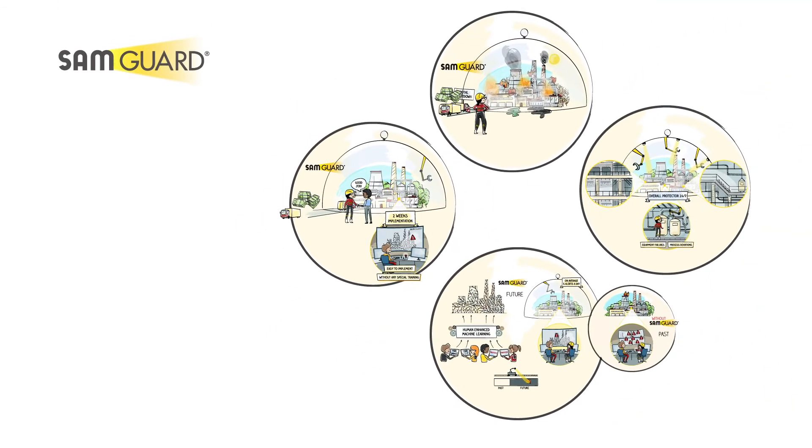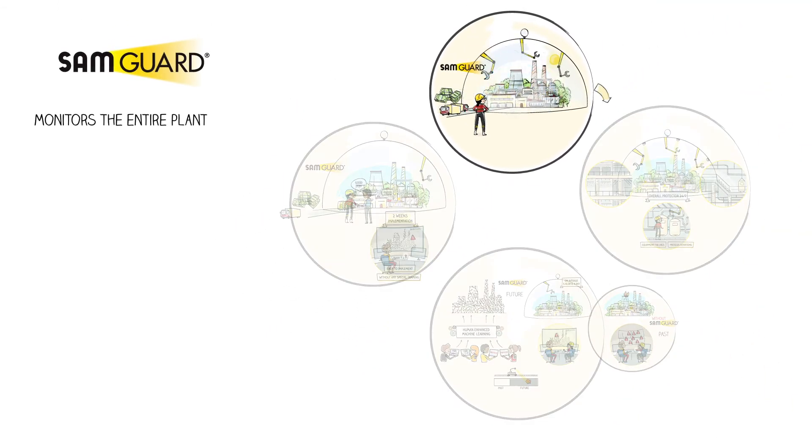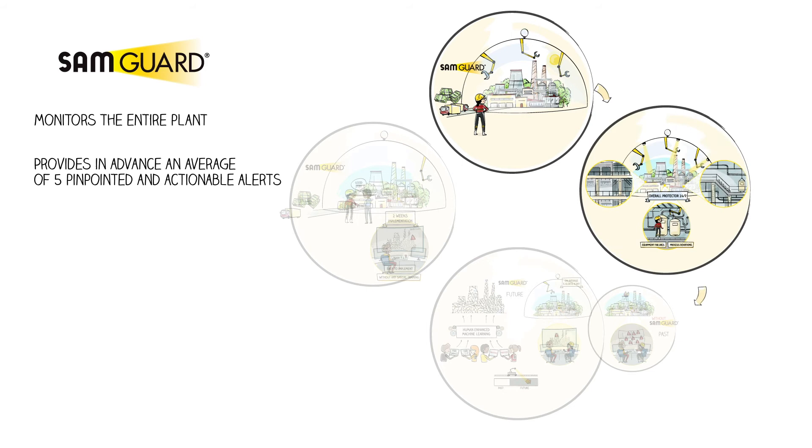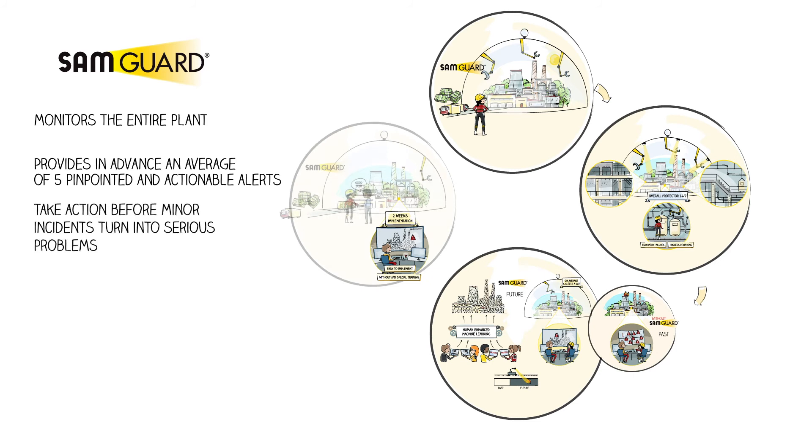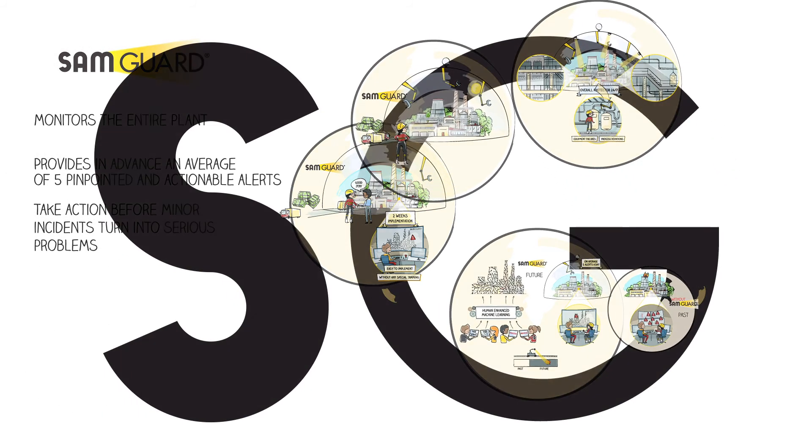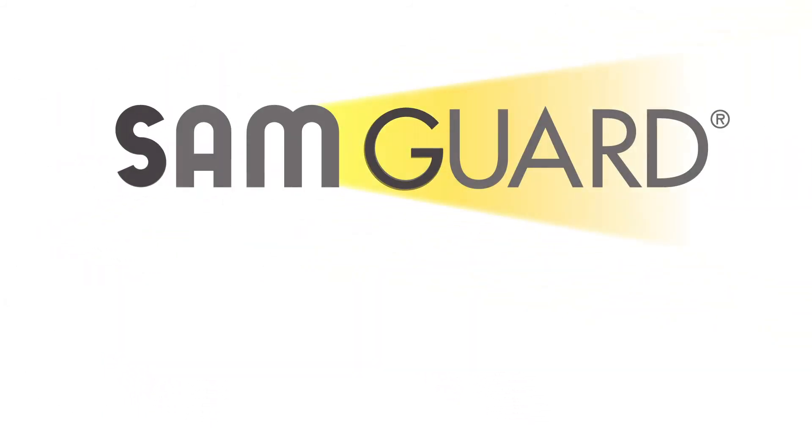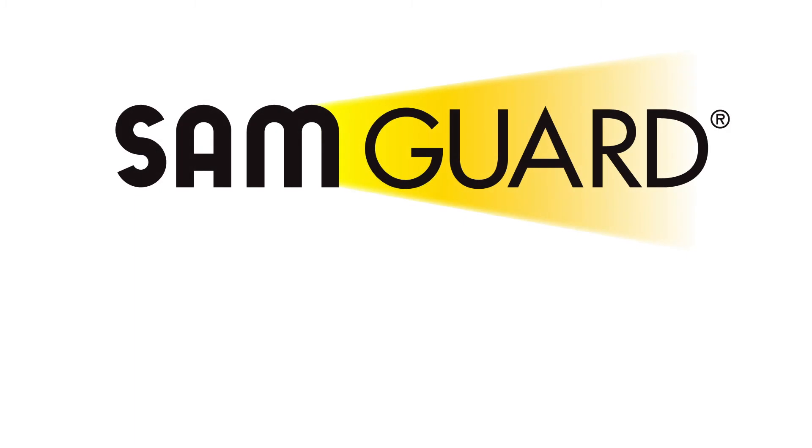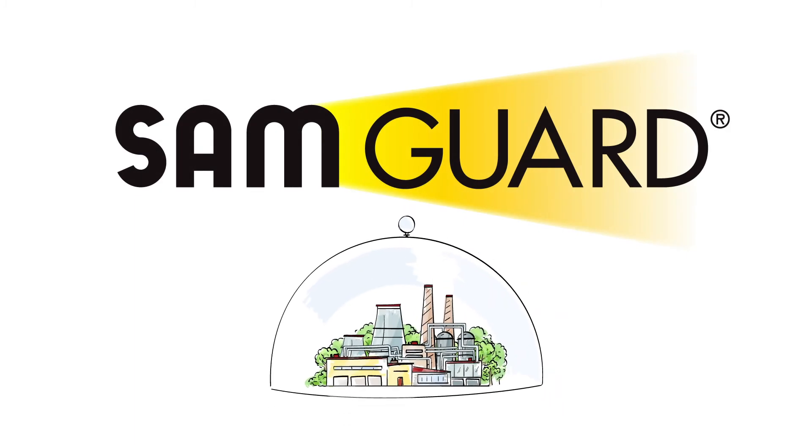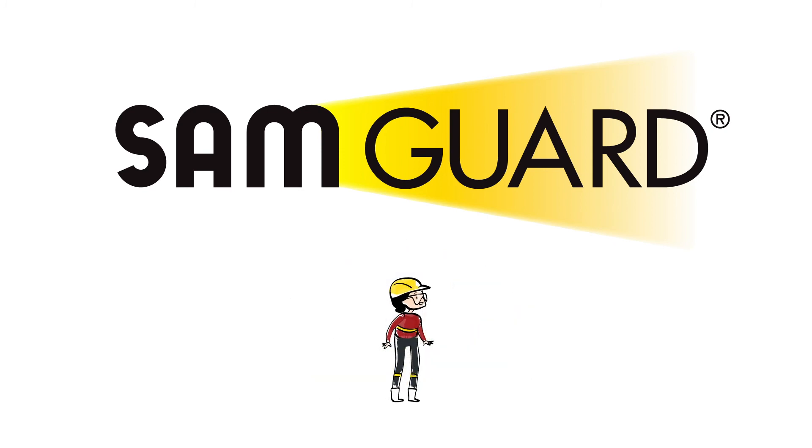So SamGuard monitors the entire plant and alerts you in advance of issues that need your attention in real time. It gives you the information you need to identify them so that you can take action before a minor incident turns into a serious problem. With SamGuard as part of your digital arsenal, you can take a giant step toward operational excellence and make sure your plant operates to its highest capacity, helping your Alex to sleep soundly.